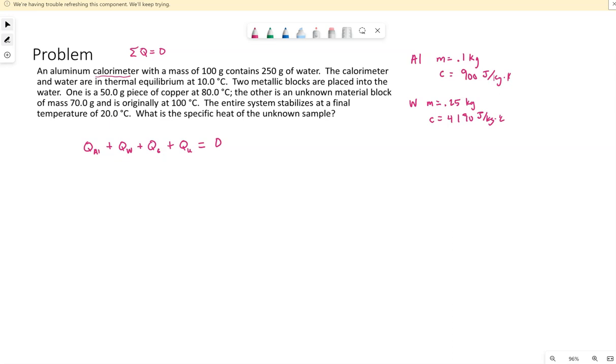We have copper, so its mass is 50 grams. Off the test notes, C is 385. And then this unknown material has a mass of 70 grams. So let me write that in kilograms like I did the others, so 0.07 kilograms. The C is what we're trying to find.